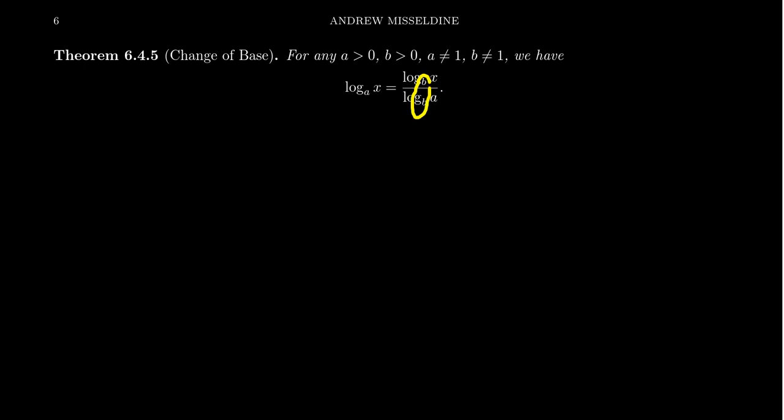So b is your new base. You can pick whatever you want. The old operand goes on top. The old base goes on the bottom. And this gives us the so-called change of base formula for logarithms.